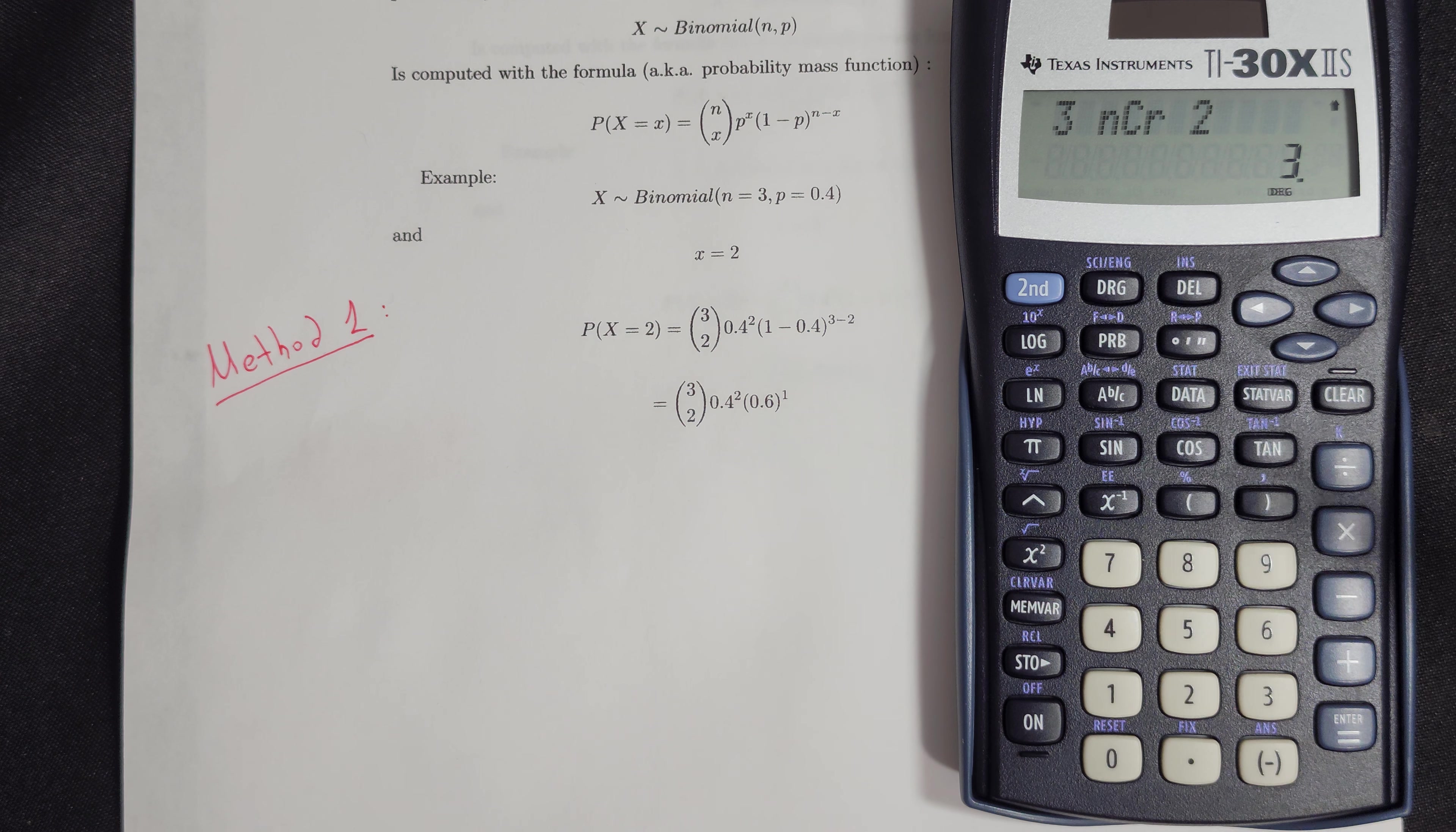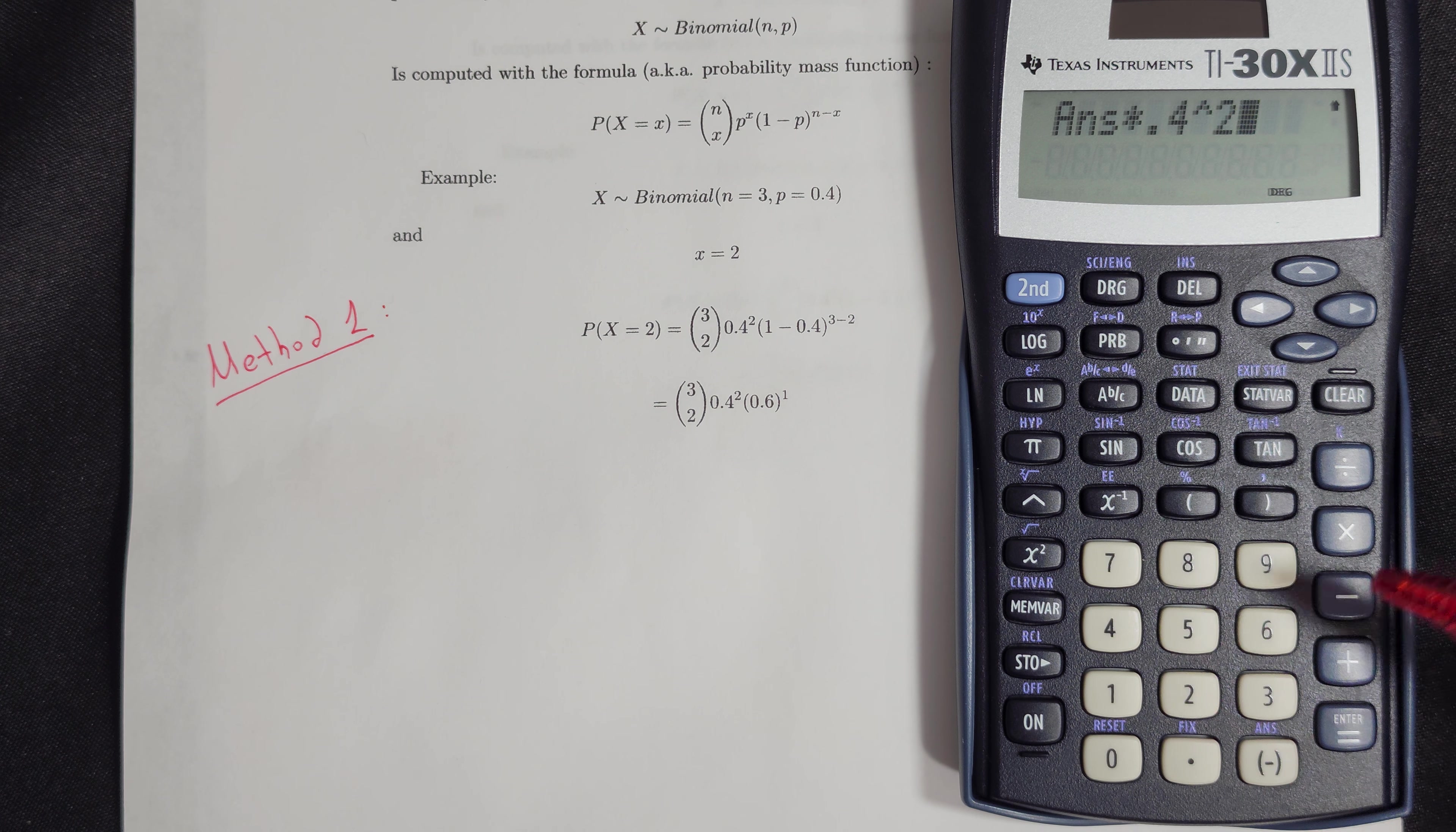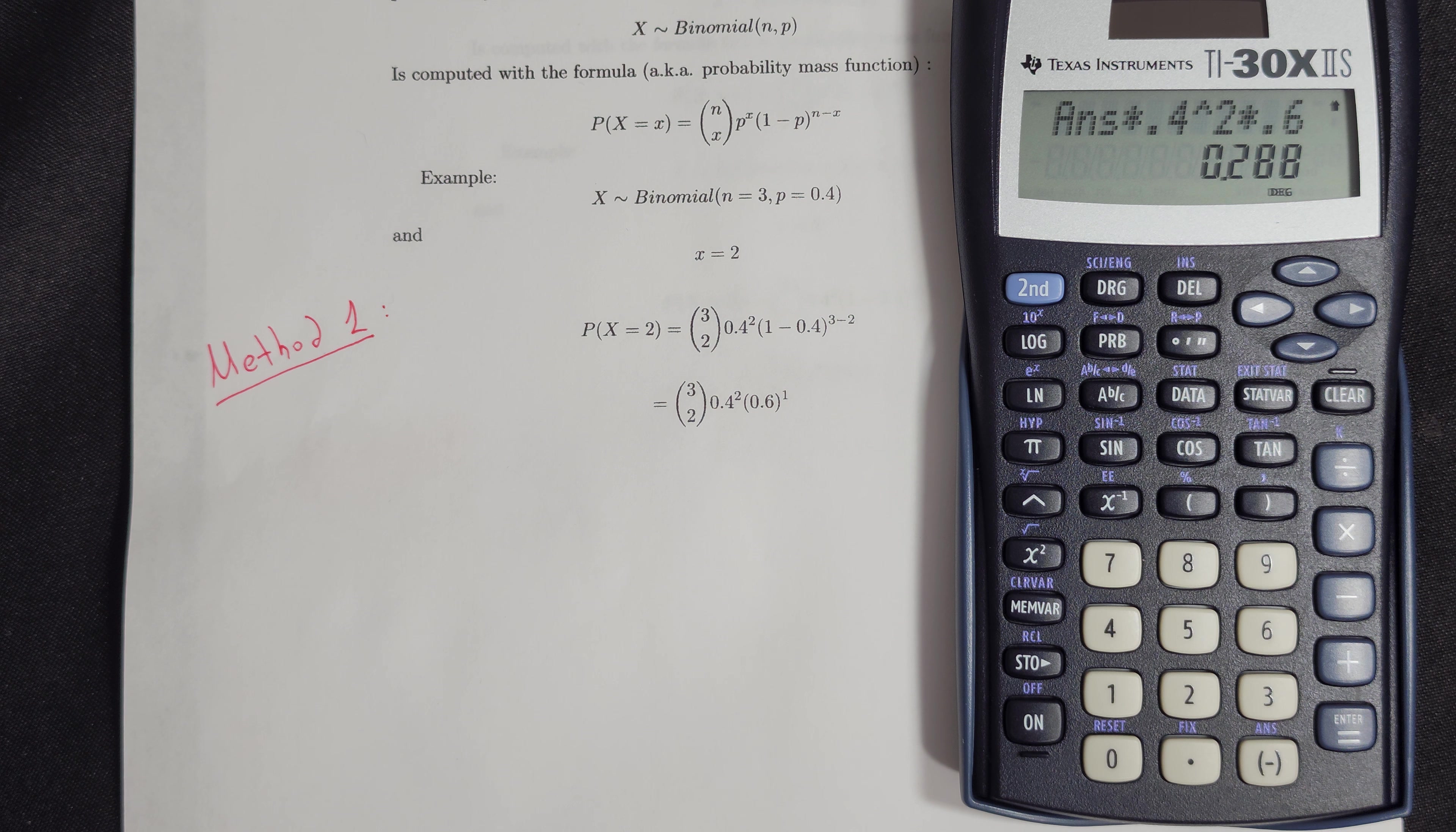Then we have 2 more parts which is the 0.4. So we multiply by 0.4 on the power of 2 squared, and then we have to multiply this by 0.6 which is the last term. And this is the probability what we are looking for.